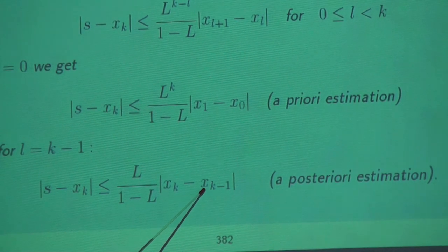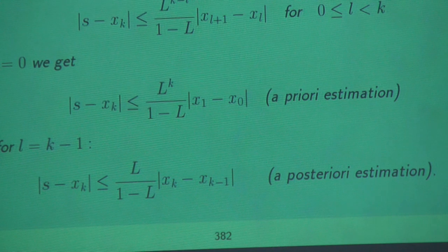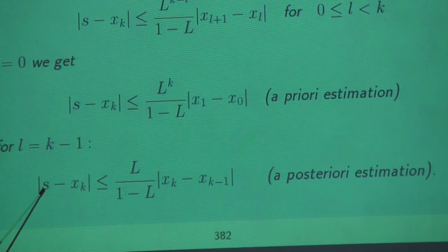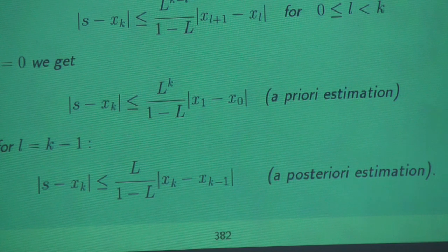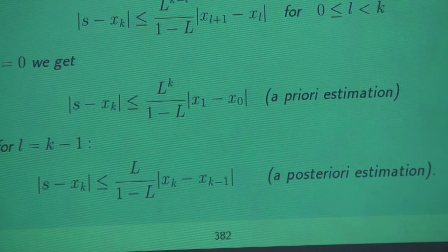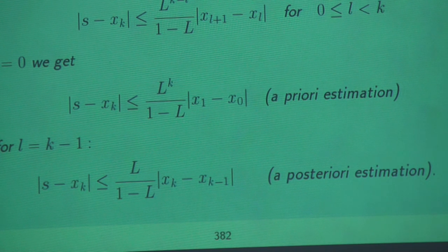In the a posteriori estimation, between step k and step k+1, we ask how far x_k is from the goal S. And the formula tells us. The important parameter is L, our Lipschitz constant — it tells us how fast our iteration converges, whether it's a bicycle or a Ferrari. That's what our Lipschitz constant tells us.